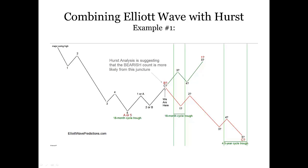As we look forward in time, Hurst analysis, as generated by Sentient Trader Software, is projecting date ranges where the next 18-month and four-and-a-half-year cycles are likely to bottom. As you can see, with an 18-month cycle due fairly soon, it is quite doubtful that price would continue higher, making a wave three peak at about the same time as a large cycle trough is due. The bearish count is therefore much more likely in this example.